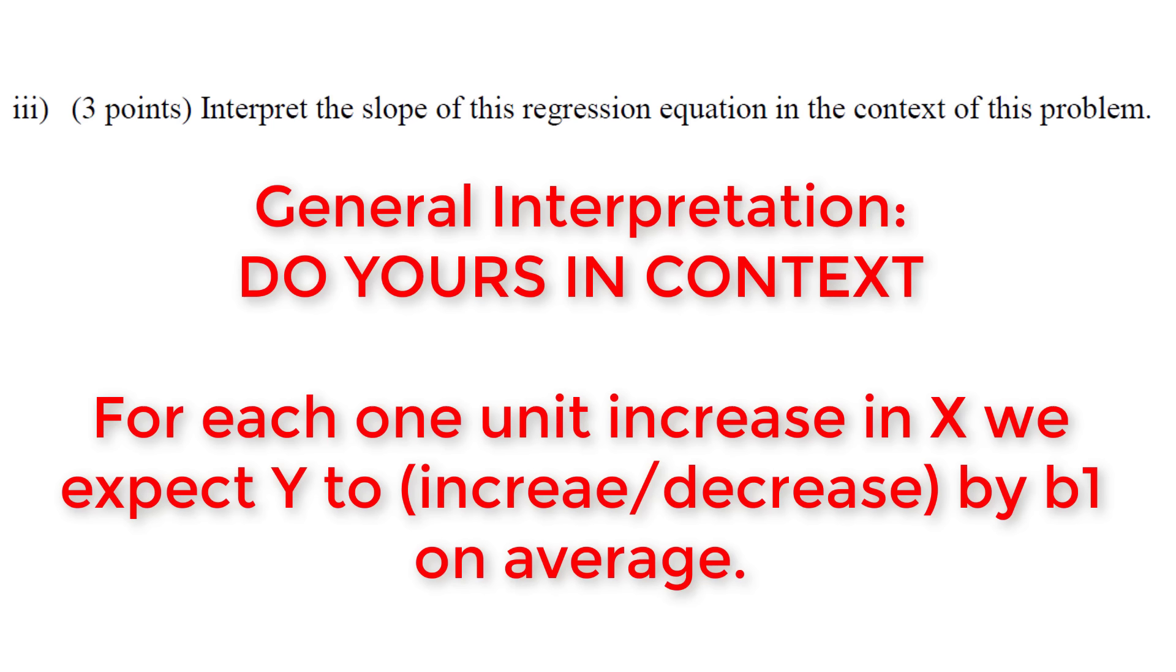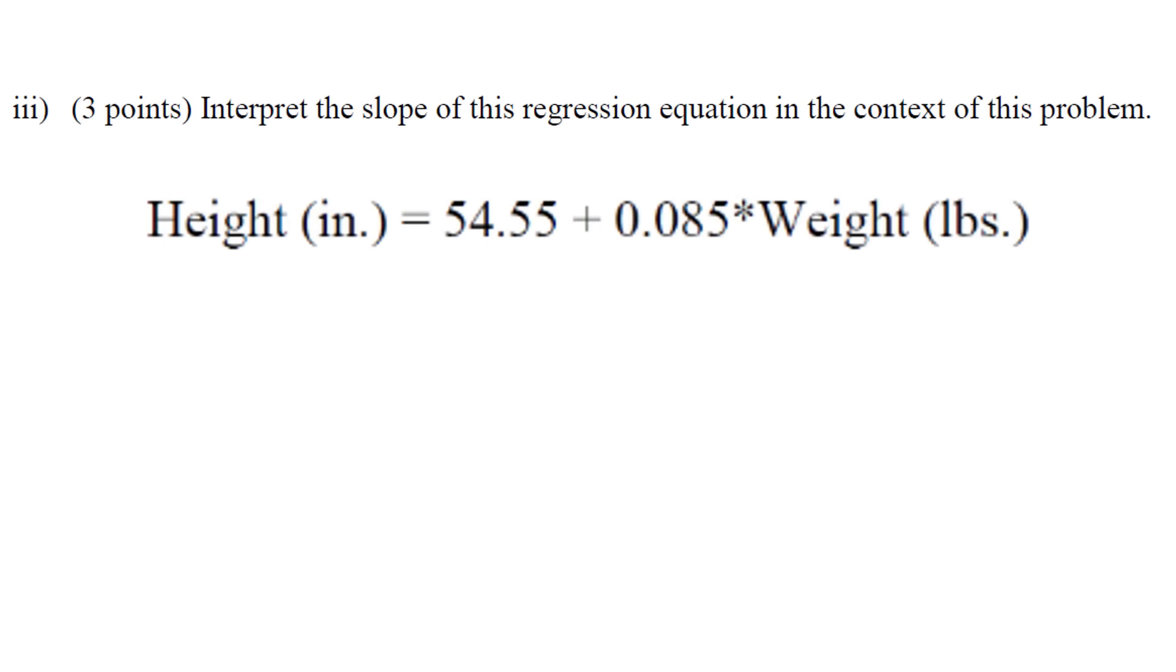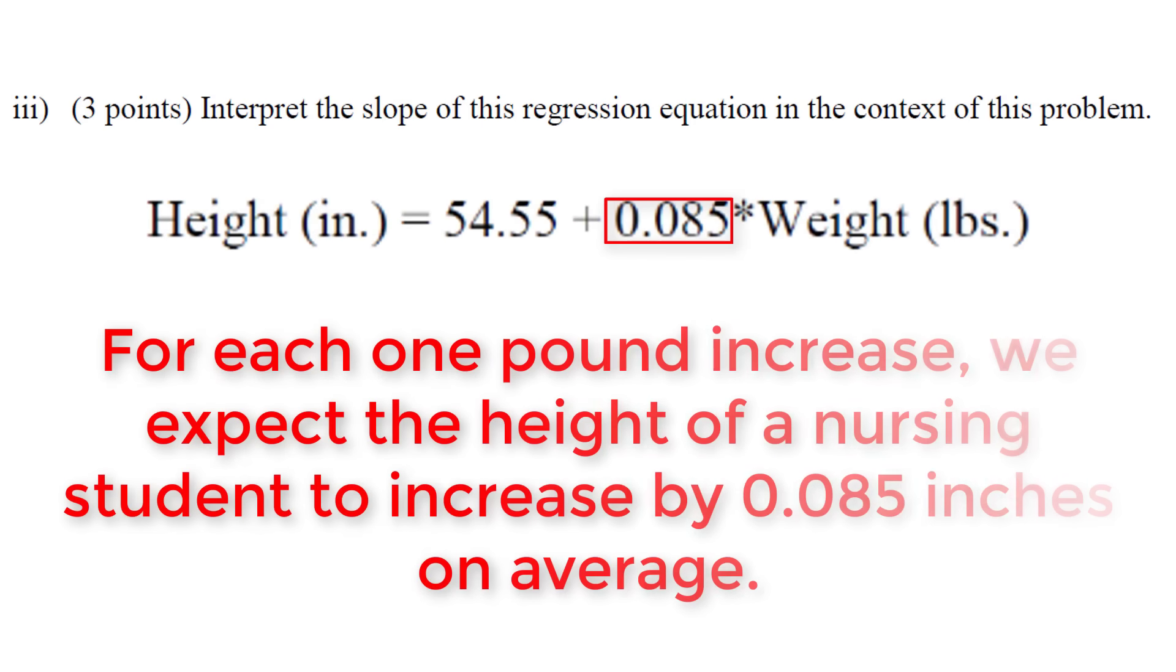If the slope were negative, we'd say: for each 1 unit increase in x, we expect y to decrease by b₁ on average. We need to do this in context. For each 1 pound increase in weight,